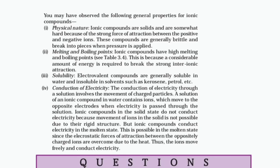Solubility: electrovalent compounds are generally soluble in water and insoluble in solvents such as kerosene and petrol. Conduction of electricity: the conduction of electricity through a solution involves the movement of charged particles. A solution of an ionic compound in water contains ions that move to opposite electrodes when electricity is passed. Ionic compounds in the solid state do not conduct electricity because movement of ions is not possible due to their rigid structure. But ionic compounds conduct electricity in the molten state, since the electrostatic forces of attraction are overcome due to heat, allowing ions to move freely.